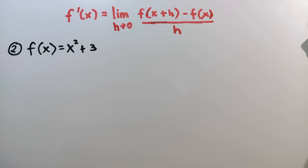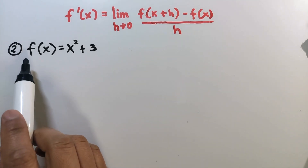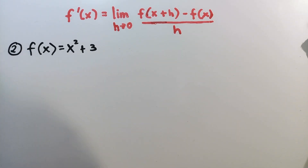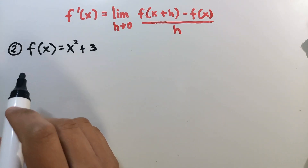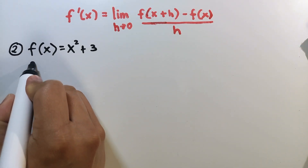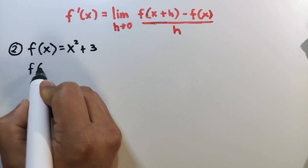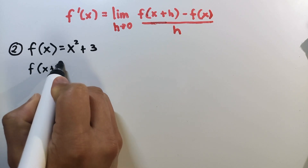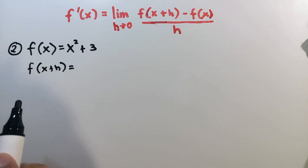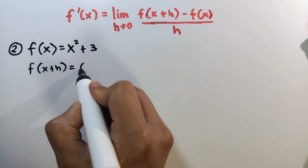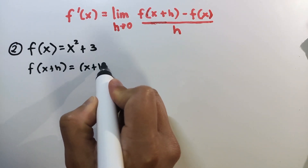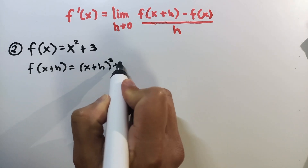For the next example, we're going to consider the function f of x equals x squared plus 3. Same as example number 1, our objective here is to find the derivative of this function using this formula. The first step is to find f of x plus h, which means we substitute x plus h for x. So that's x plus h squared, plus 3.